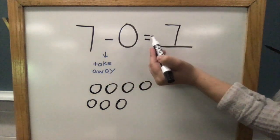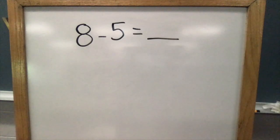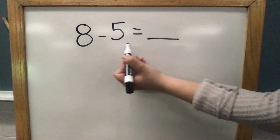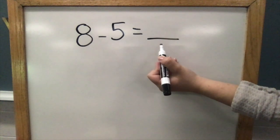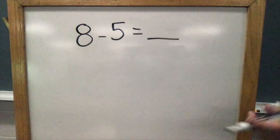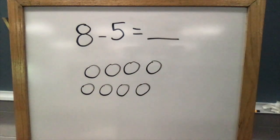Let's do one more. Our last problem is 8 - 5 = __. What should I do first? I should start by drawing eight counters. What does the problem tell me to do next?